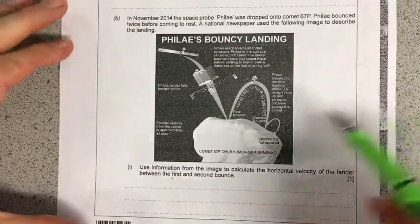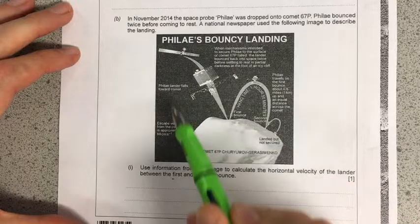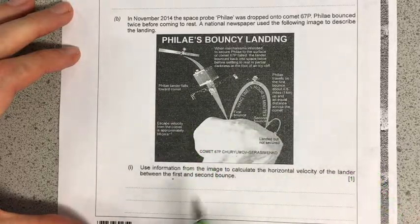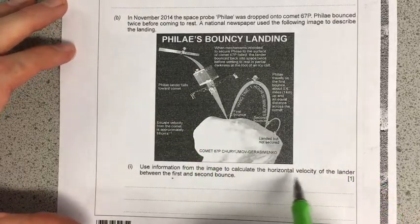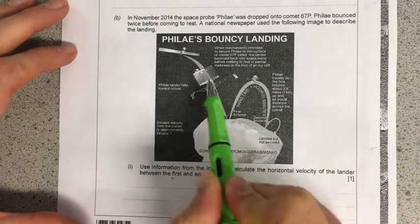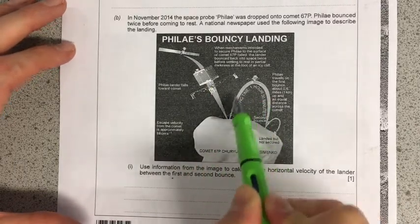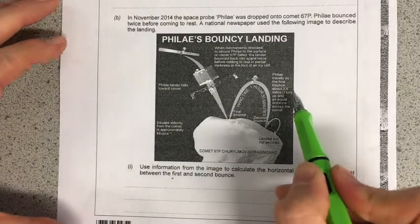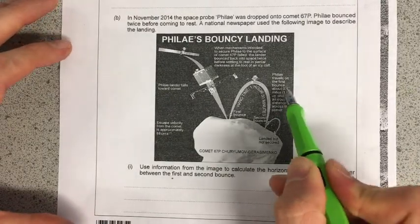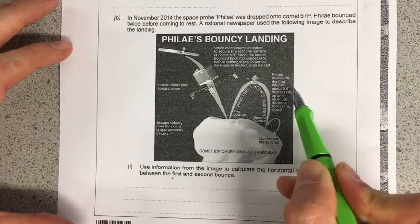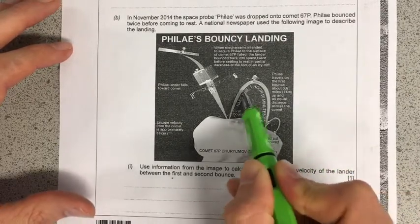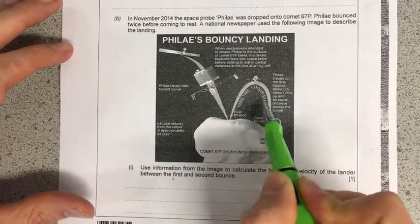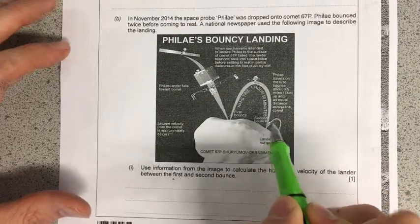The next part of this question wants us to use some information from this infographic. They want us to calculate the horizontal velocity of the lander as it came through this bounce here. And they're giving us two important pieces of information. The first, which we'll come back to in a second, is the fact that it's travelled one kilometre. The other is the time that it's got written inside this loop here, which is one hour and 50 minutes.